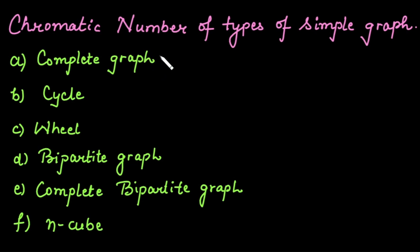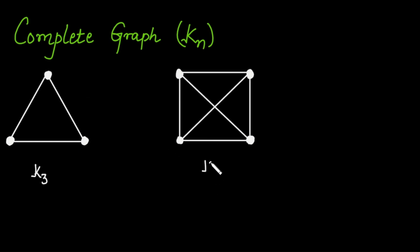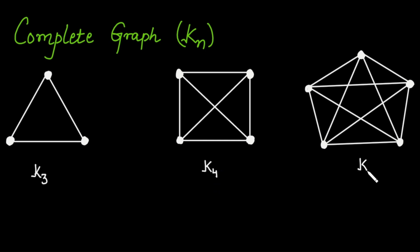Let's start with the first case, that is the complete graph. We need to find how many colors are required to color the vertices of the complete graph so that no adjacent vertices have the same color. If there is an edge between two distinct vertices, we cannot assign them the same color. We have considered K3, a complete graph with three vertices. Let's start by assigning a color to the first vertex — suppose we color it red.